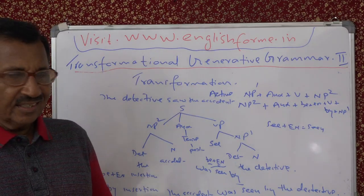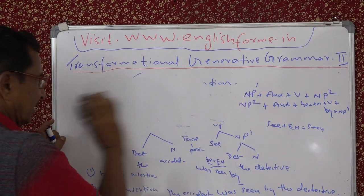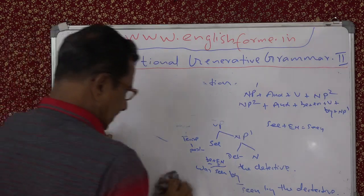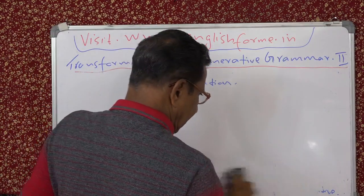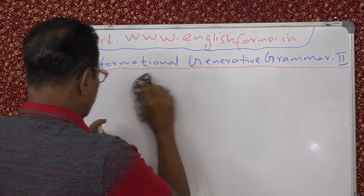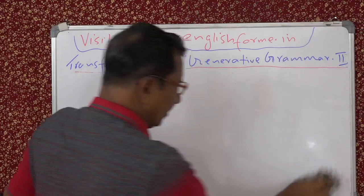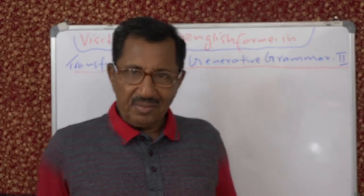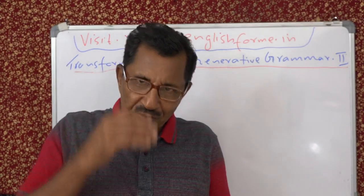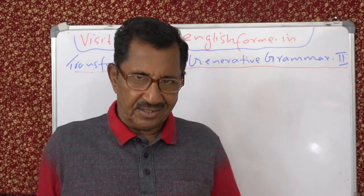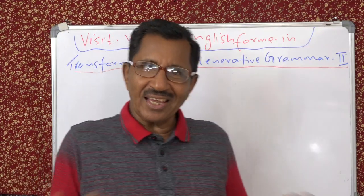That is the difference. I will do this once again to make things clear to you — I will draw both the trees side by side, then you will see the difference between active and passive. You already know it. But the thing is that in teaching grammar, what you know, you are making explicit. Nothing new — what you know, you are making explicit.